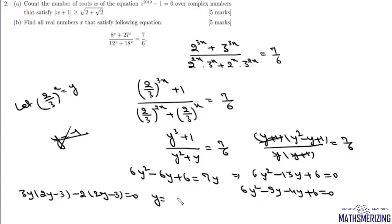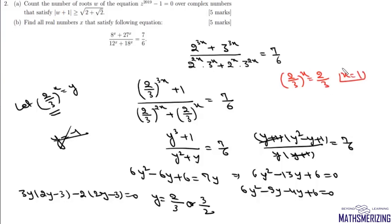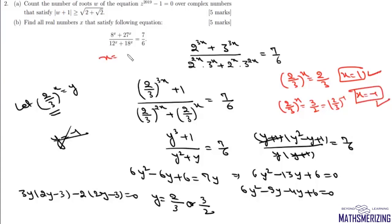Factoring 6y² - 13y + 6 = 0 gives (3y - 2)(2y - 3) = 0, so y = 2/3 or y = 3/2. Substituting back: if (2/3)^x = 2/3 then x = 1, and if (2/3)^x = 3/2 = (2/3)^(-1) then x = -1. So the answer is x = ±1.